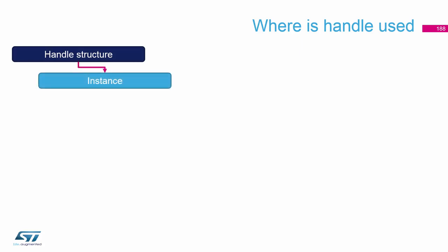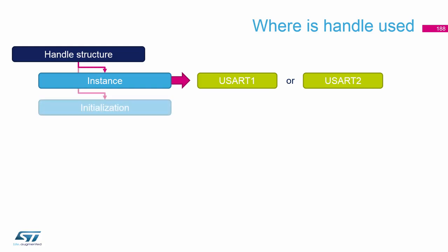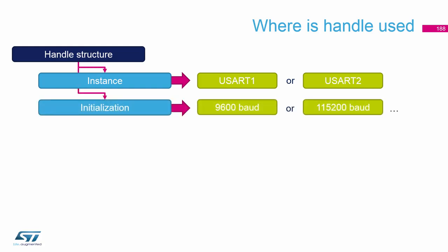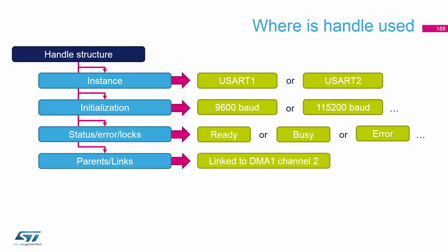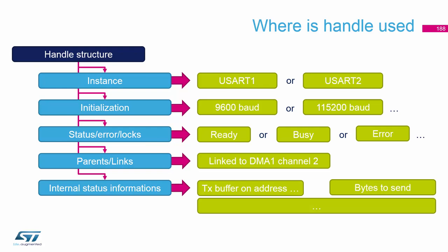What is in the handler? There is the instance — which periphery to use — there are some initialization parameters, in our case the baud rate. There is also what is the state of the periphery: if it's busy, if it ended up with an error, or if it's ready. And also some links between whether this periphery is linked with the DMA or with another periphery. And also some internal status like the buffer address, how many bytes we want to send, or how many bytes were already sent. These are internal parameters which the handle needs to know.